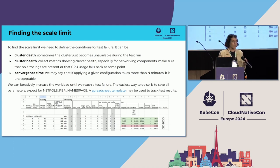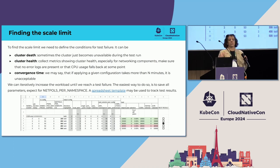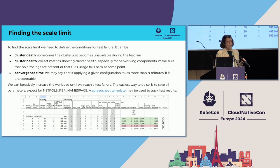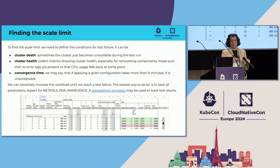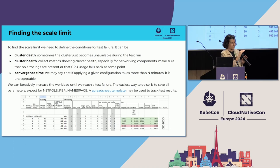To find the scale limit, we need to define the conditions for a test failure. There are multiple ways to do so. Cluster death is an obvious one that will happen sometimes if you apply too many network policies. Then there is cluster health — you can track metrics around resource usage or whatever you care about. The main thing we use here is convergence time: if applying a given network policy configuration takes longer than N minutes — you can set it yourself, say 10 minutes — then the test is failed. To find the scale limit, you save all the parameters and increase the number of network policies per namespace for every run. At some point the test fails, and the answer to 'how many network policies can I create with a given scale profile' is the last successful run.